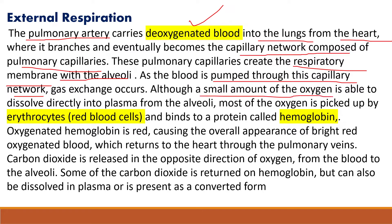A small amount of oxygen is able to dissolve directly into the plasma from the alveoli. Most of the oxygen is picked up by erythrocytes — that is, red blood cells. The plasma is the fluid component of blood, and oxygen in RBCs — erythrocytes and red blood cells — binds within the RBC.